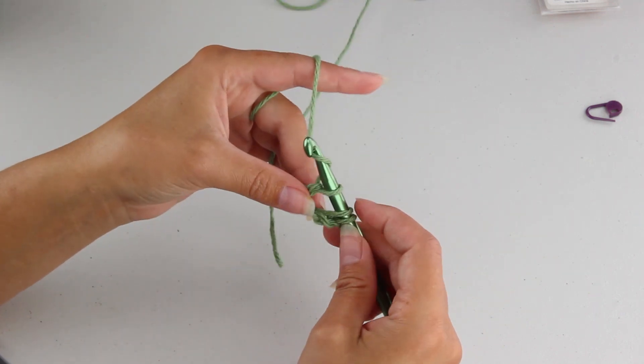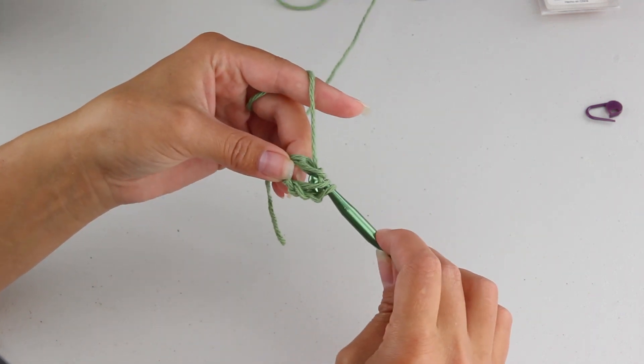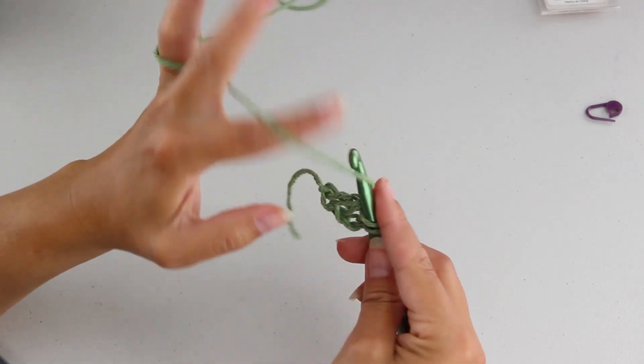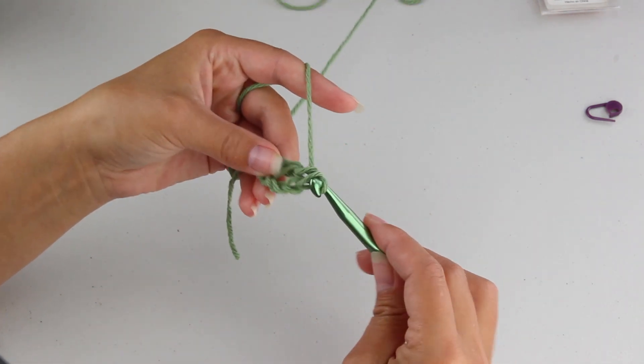Then you're going to yarn over again, pull through two loops, yarn over, pull through the remaining two loops.